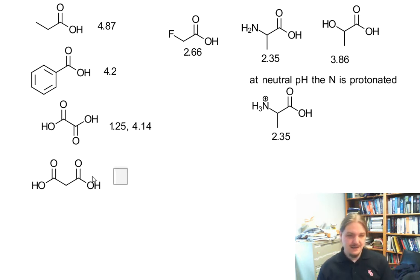Malonic acid, first pKa is 2.83, and the second pKa is 5.69. So there's again an effect of having the electron withdrawing carbonyl group nearby.